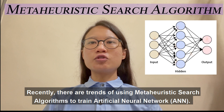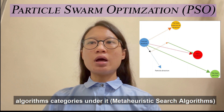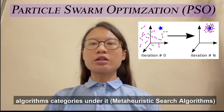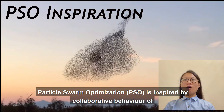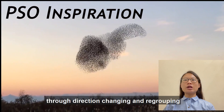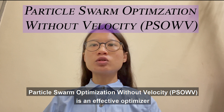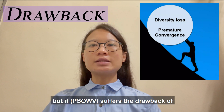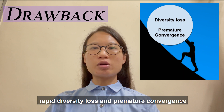Recently, there are trends of using meta-heuristic search algorithms to train ANN. PSO is one of the most popular algorithms categorized under it. PSO is inspired by the collaborative behavior of bird flocking and fish schooling to search for food through direction changing and regrouping. A variant of PSO, PSO-WV, is an efficient optimizer, but it suffers the drawback of rapid diversity loss and premature convergence.